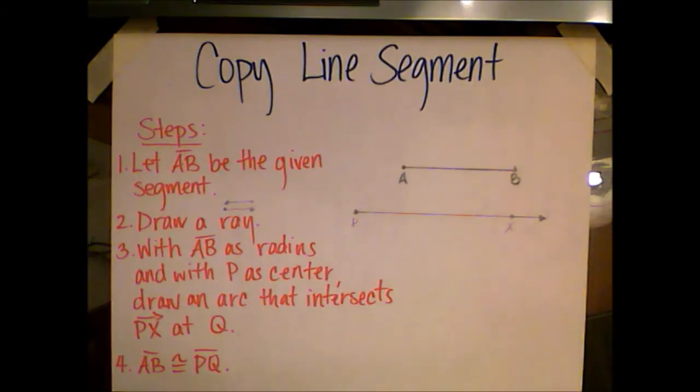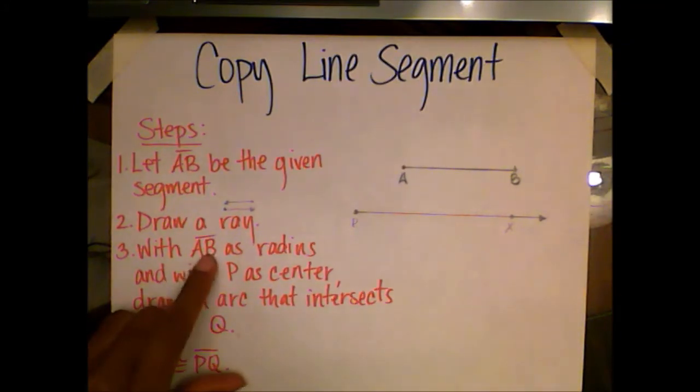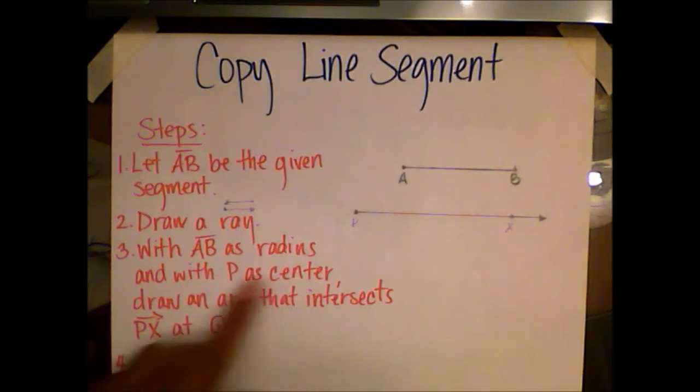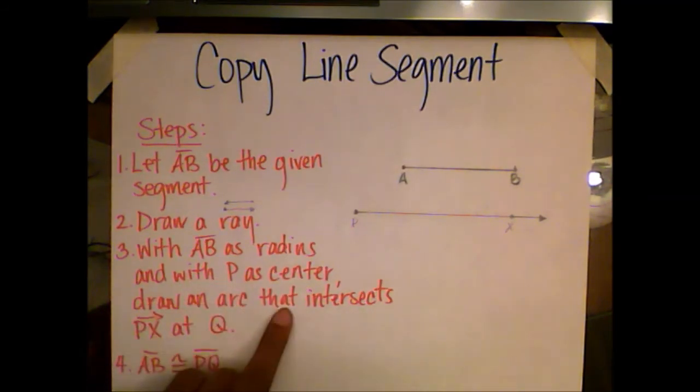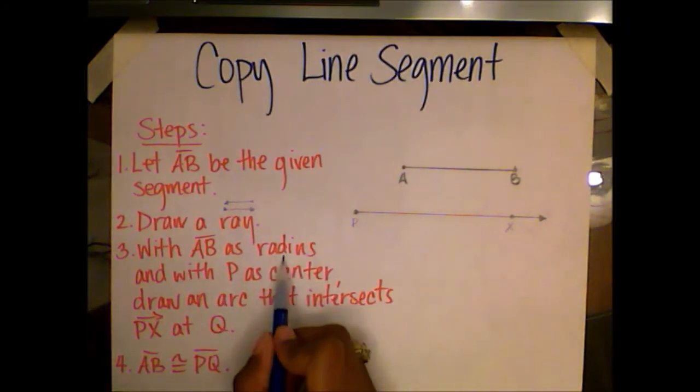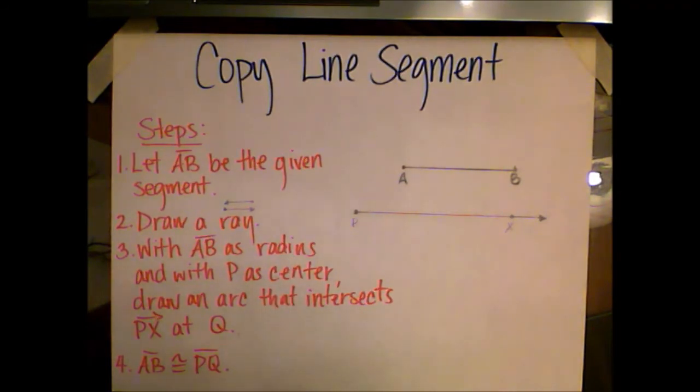Step three, with line segment AB as radius and with P as center, draw an arc that intersects ray PX at Q. Now I see two words in here: radius and center. And when I see those two words, I think automatically of a circle.